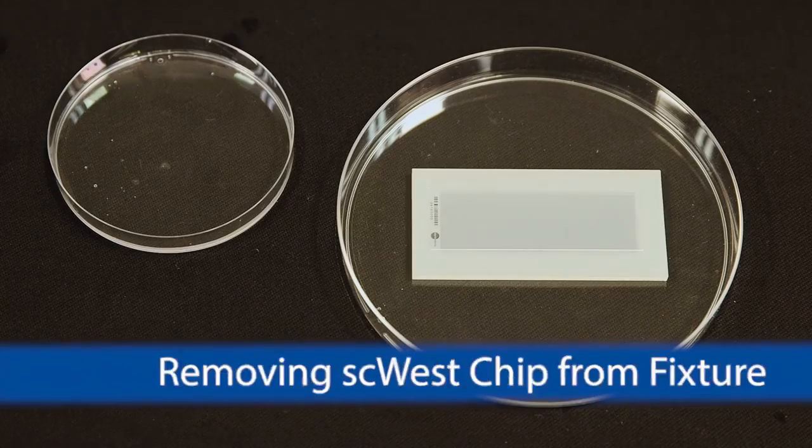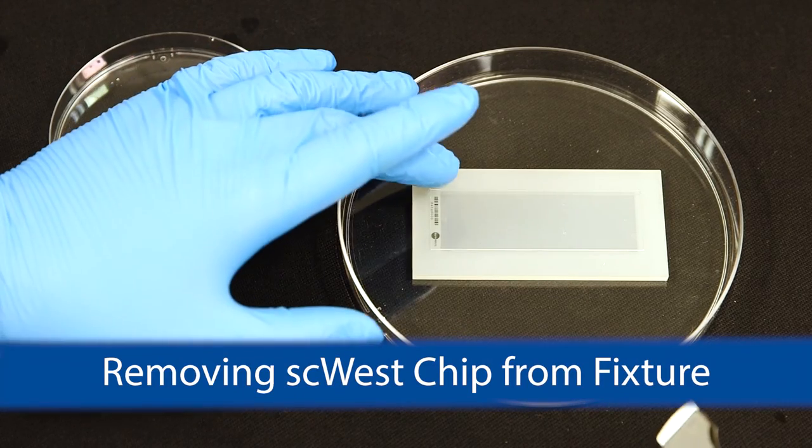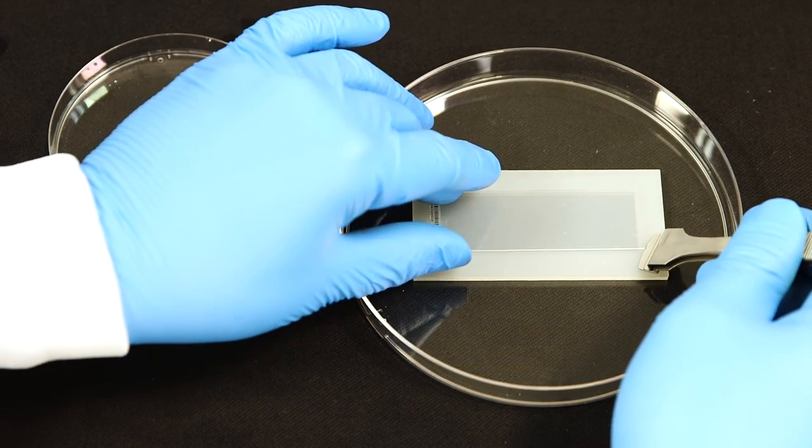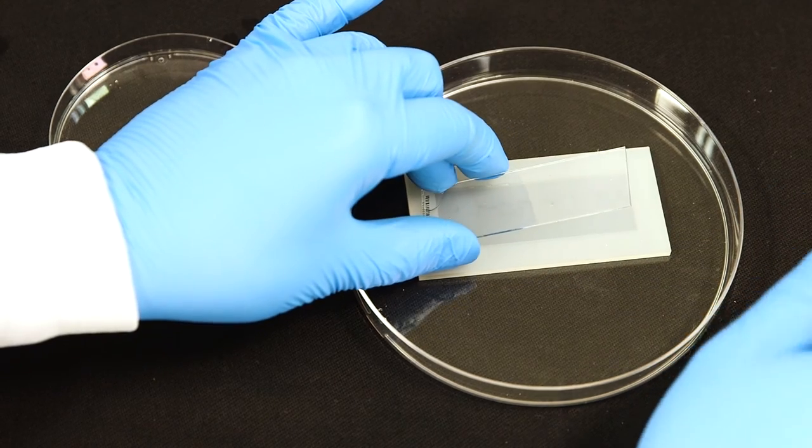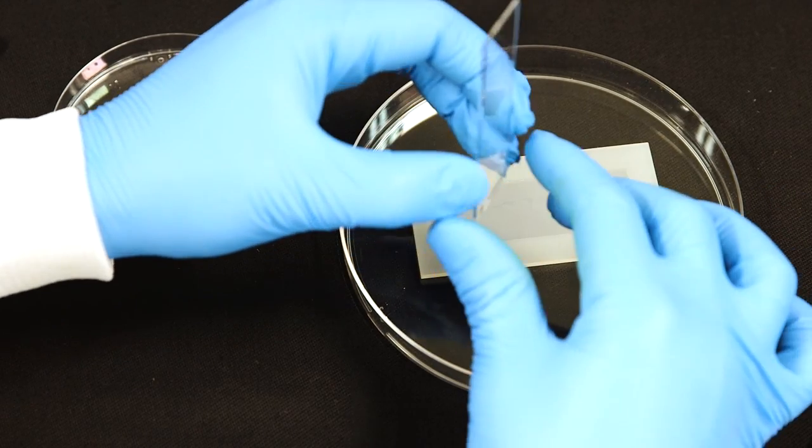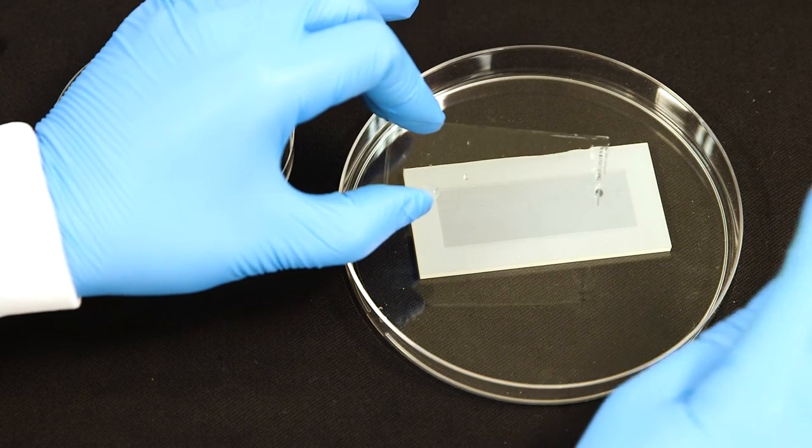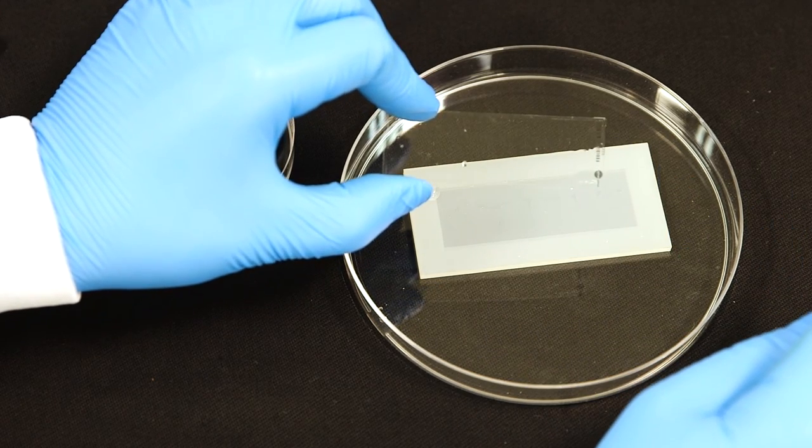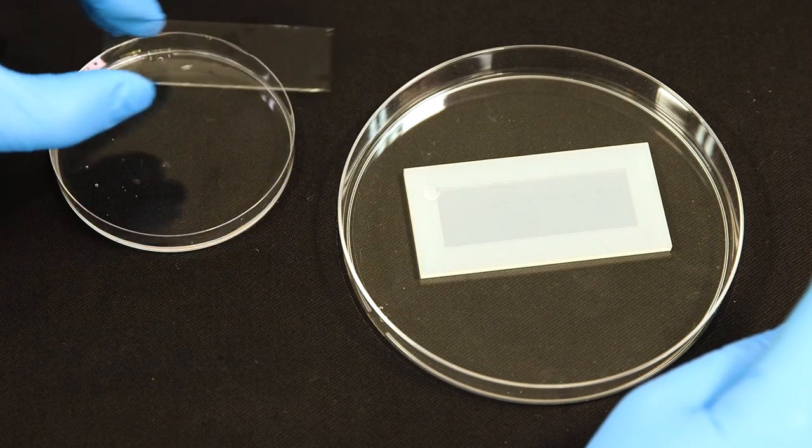To remove the SC-West chip from the probing fixture, use your finger to apply pressure to one corner of the chip and gently pry up the opposite corner of the chip with the tweezers. Be careful not to damage either the gel or the probing fixture with the tweezers.